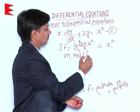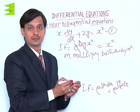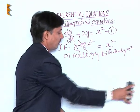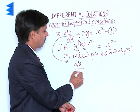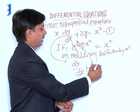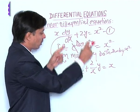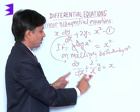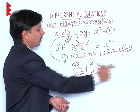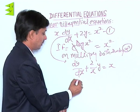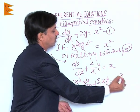On multiplying both sides by the integrating factor x², the equation dy/dx + (2/x)·y = x becomes: x²·(dy/dx) + 2xy = x³.